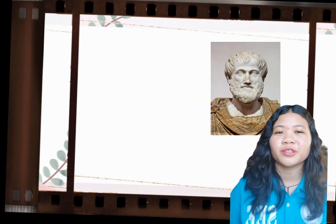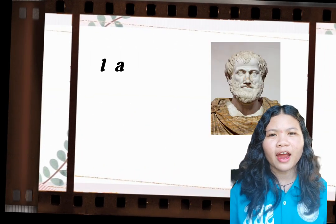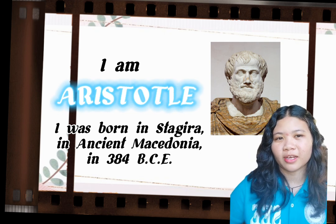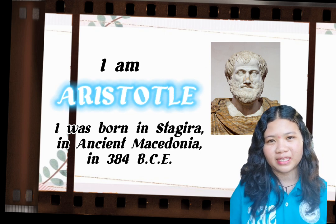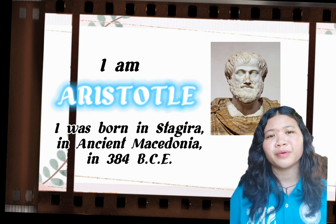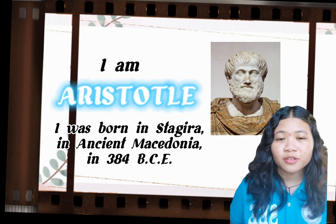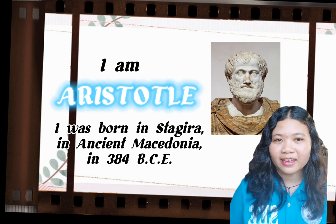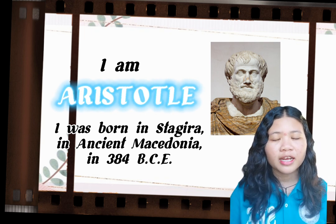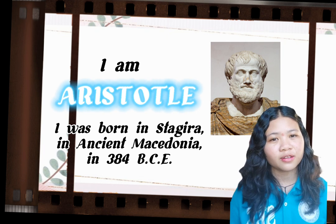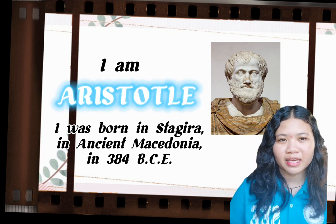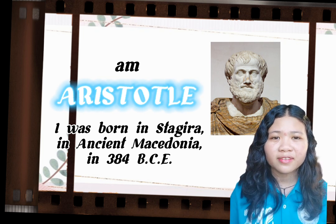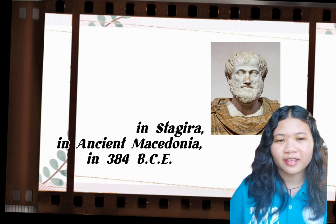First, we are going to talk about Aristotle. Aristotle was born in Stagira, in ancient Macedonia, in 384 BCE. His father was a personal physician and a close friend of the king of Macedonia. Aristotle joined Plato's Academy in Athens and remained there until Plato's death in 347.